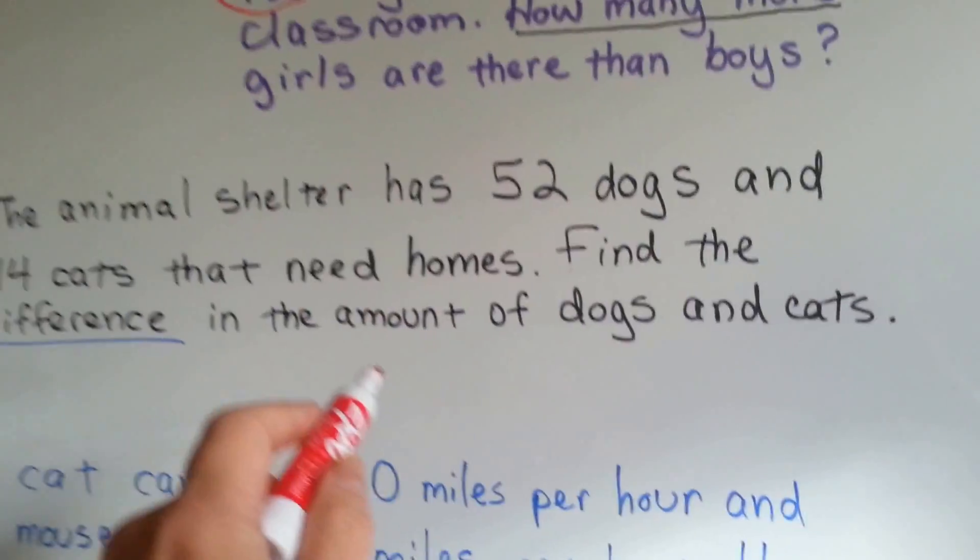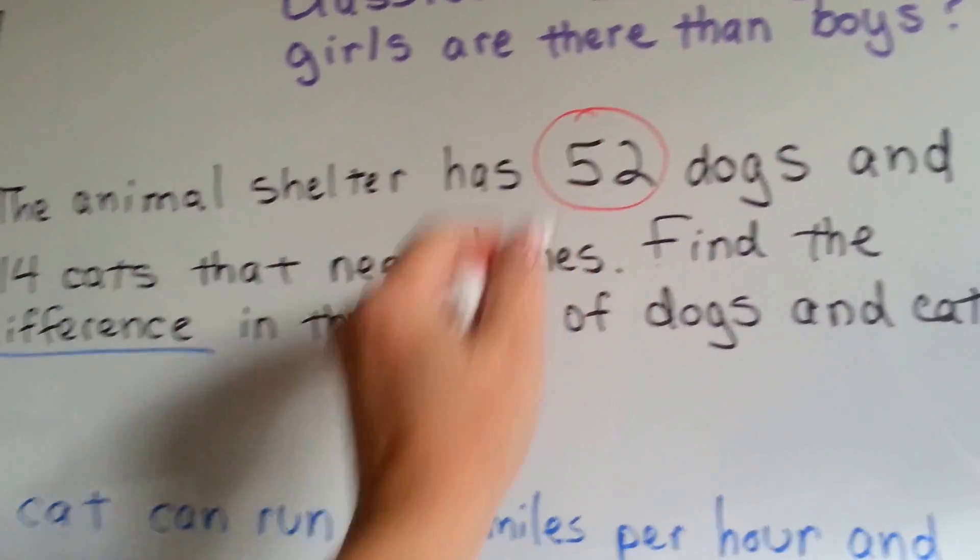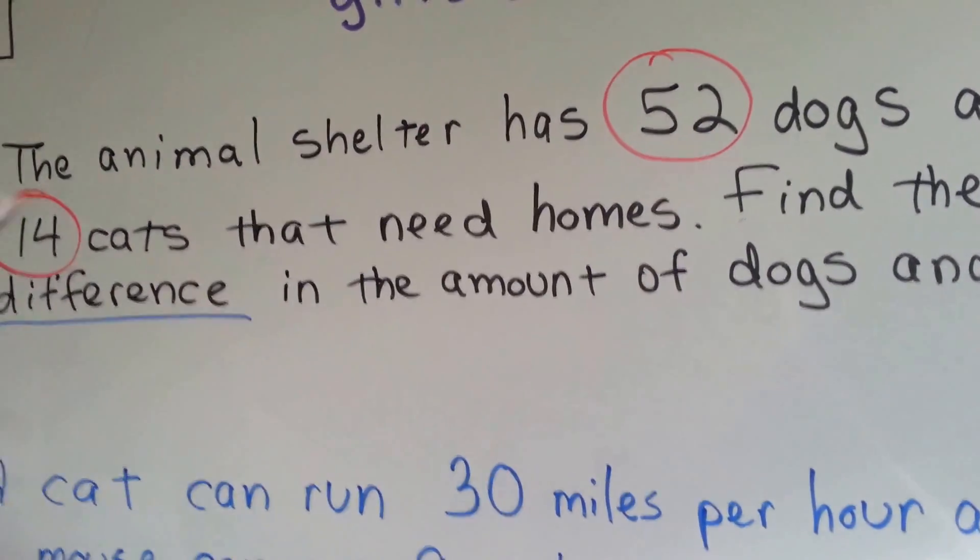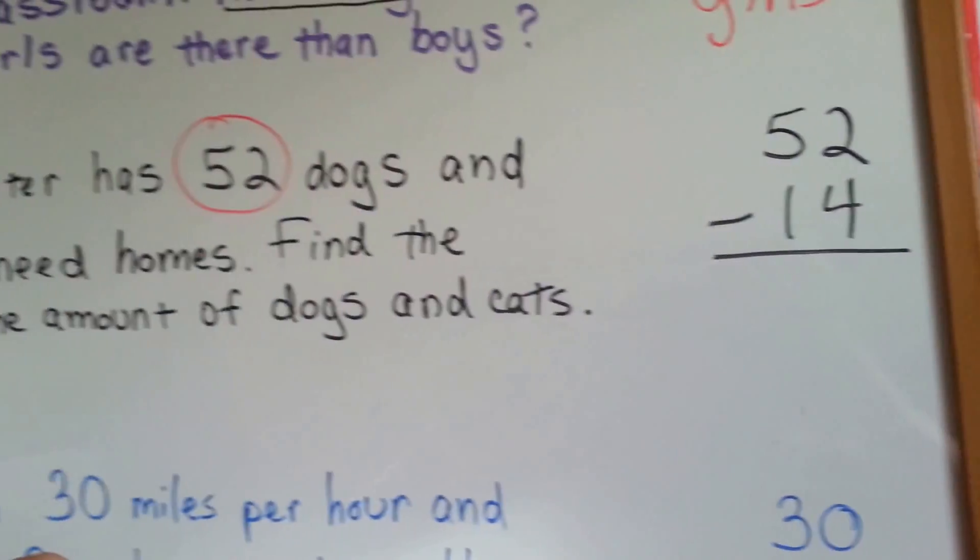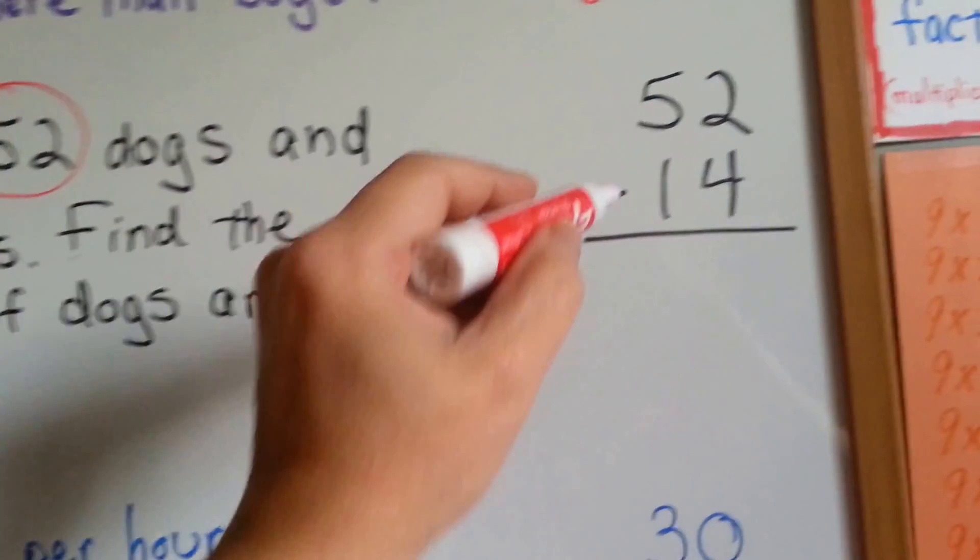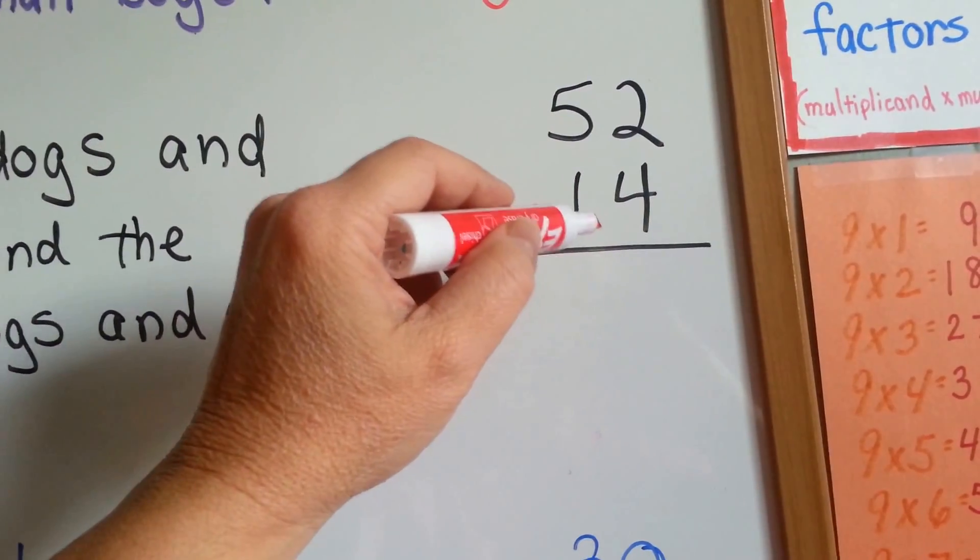So, now what we need to do is identify the numbers. 52 and 14. Those are the numbers we need to subtract. And then, don't forget, we need to label. 52 minus 14.